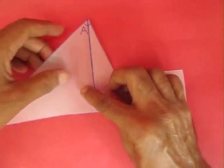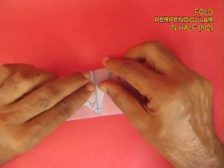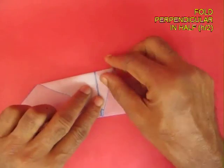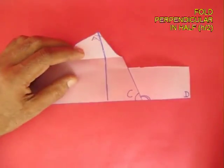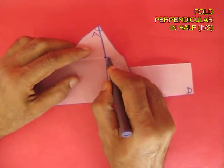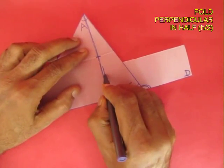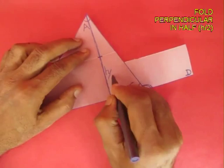Now fold the perpendicular into half by placing A on the base BC. Mark the perpendicular, mark this point and the height would be h by 2.